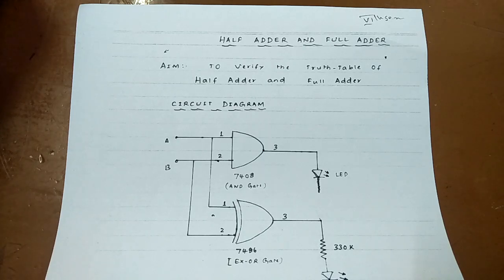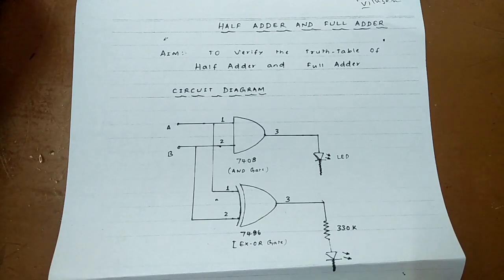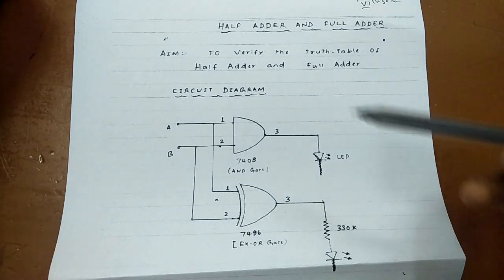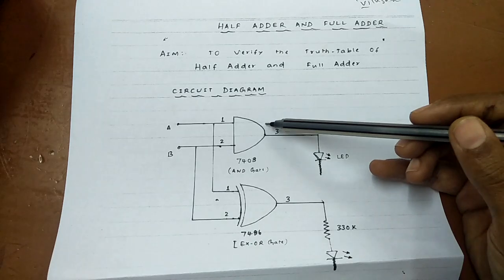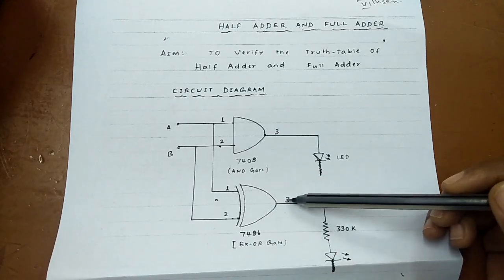In this experiment, we will construct the half adder and full adder and verify their truth tables. Let us first discuss about the half adder. The half adder consists of two gates: one is the AND gate and the other is the XOR gate.